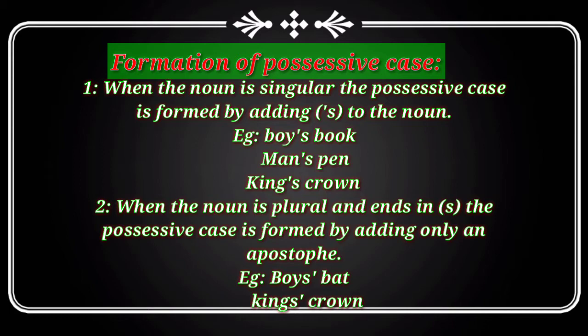The position is shown here — this is a possessive. Man's pin: this pin belongs to the man, because here's the apostrophe S on this pin. Similarly, king's crown — this apostrophe shows that it is the king's crown, meaning the crown which belongs to the king.